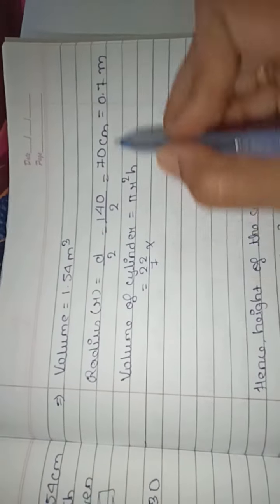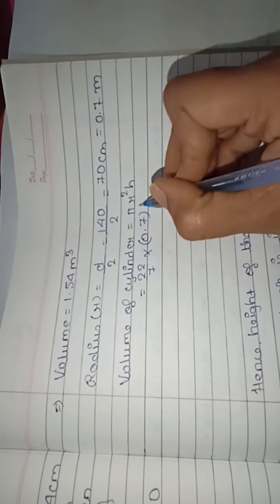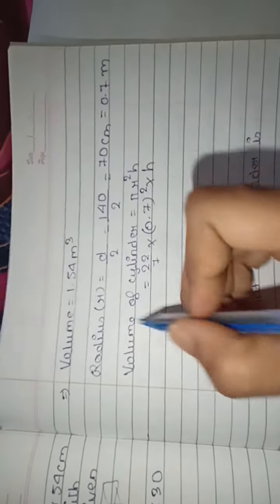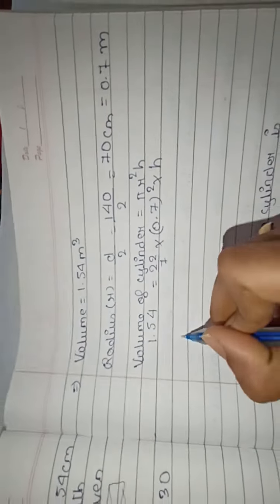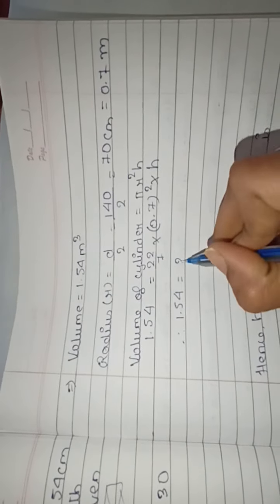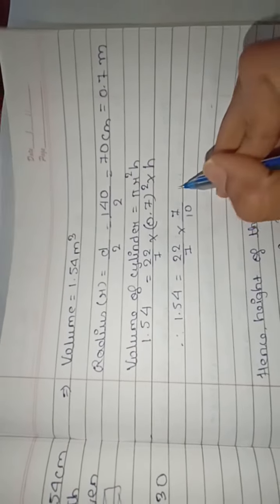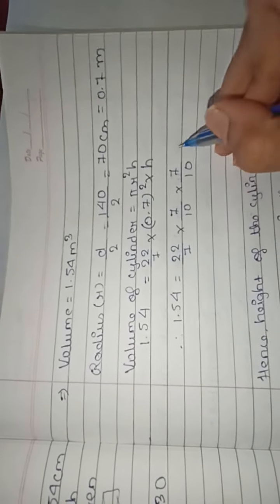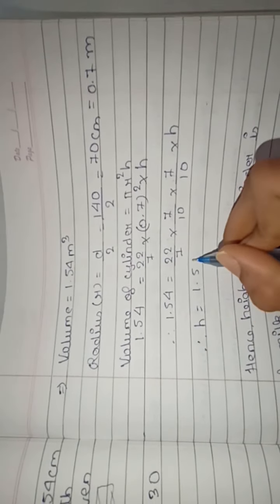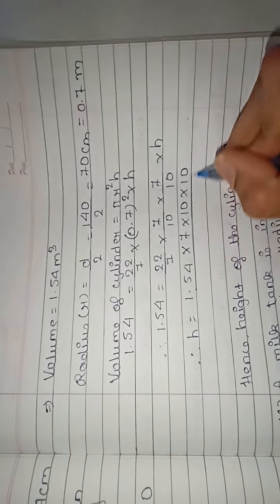So: π r² h = 1.54. That is 22/7 × (0.7)² × h = 1.54. We can write 0.7 as 7/10, so this becomes 22/7 × 7/10 × 7/10 × h = 1.54. Therefore h = 1.54 × 7 × 10 × 10 divided by 22 × 7 × 7.